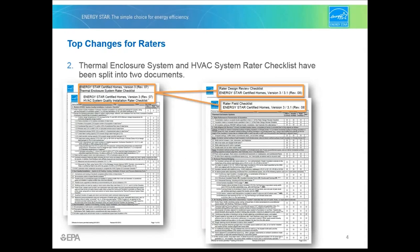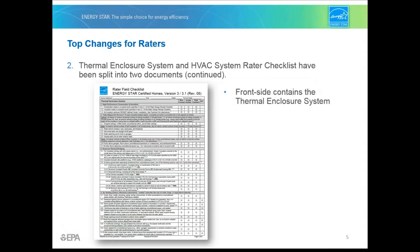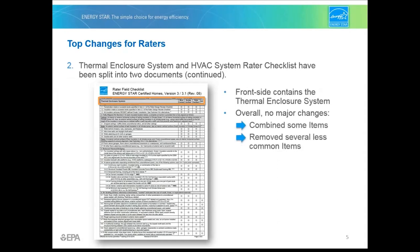Let's take a closer look at the rater field checklist. The front of the rater field checklist contains the requirements for the thermal enclosure system. Overall, there are no major changes to the requirements in this section. We have combined some items, removed a handful of less common items, and clarified the terminology regarding fully aligned air barriers.